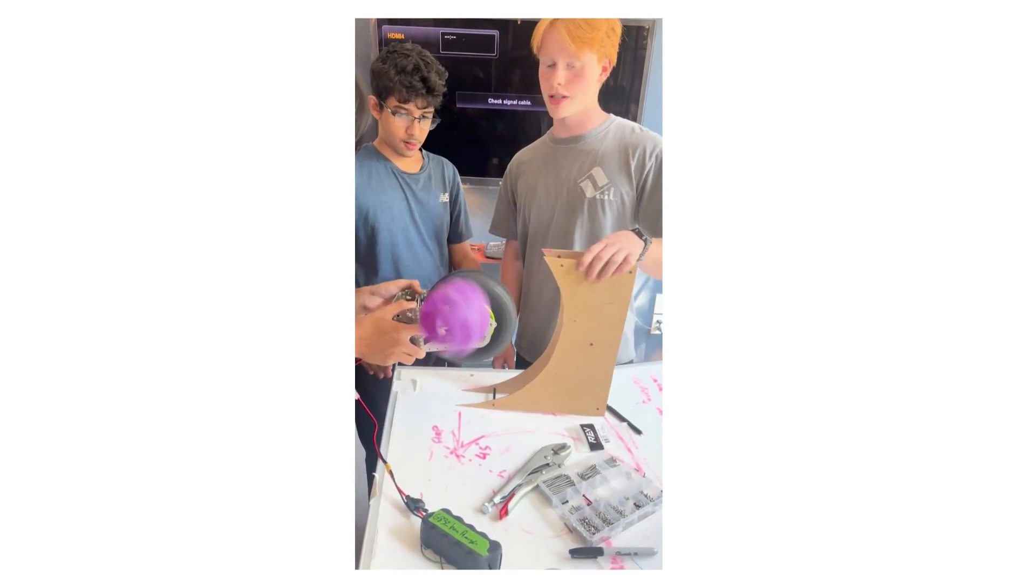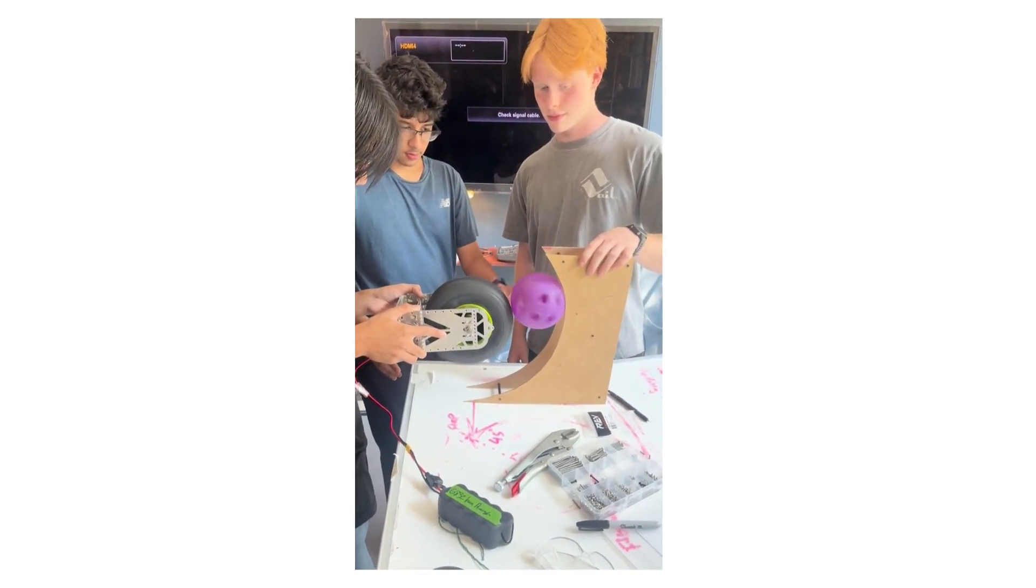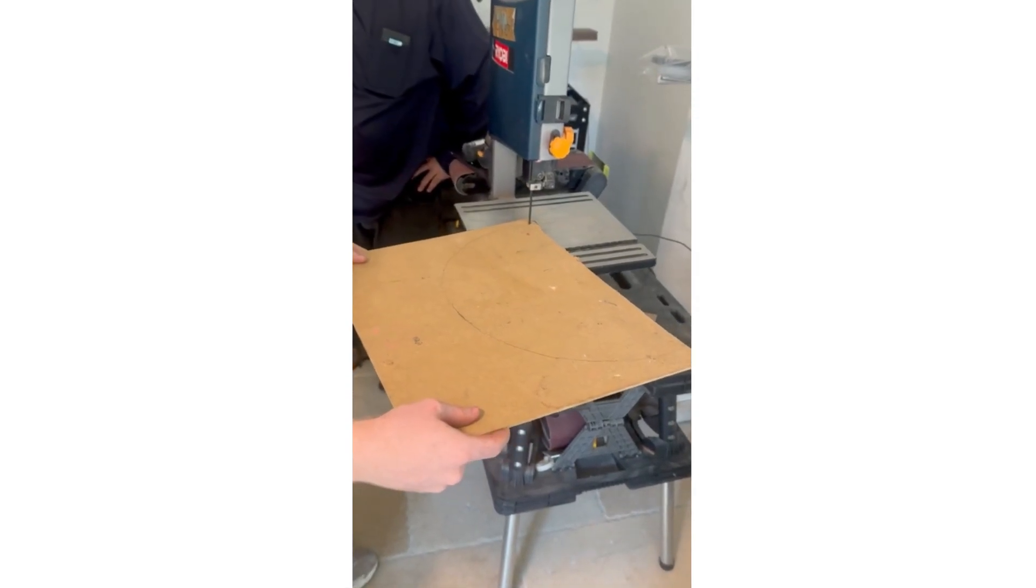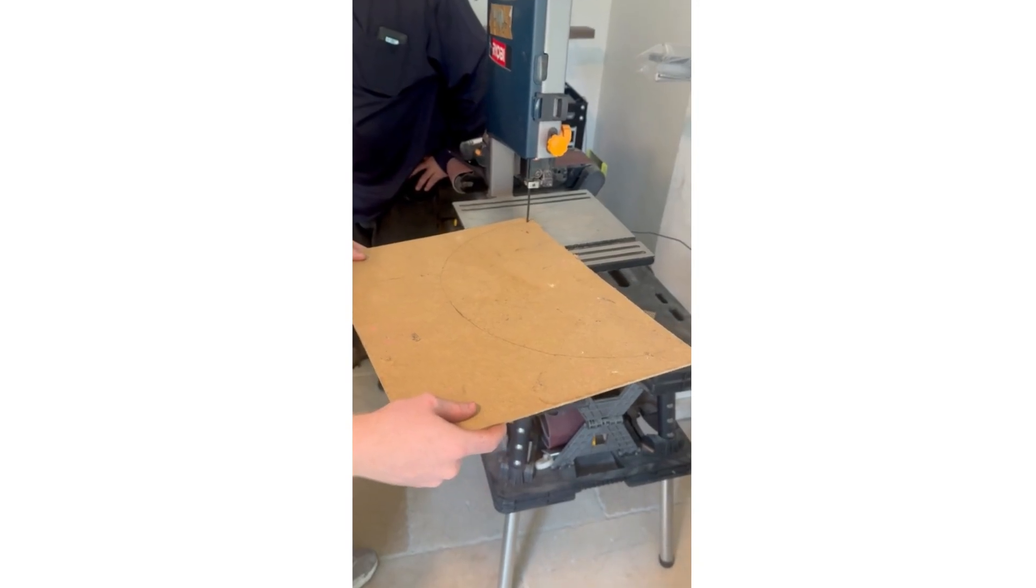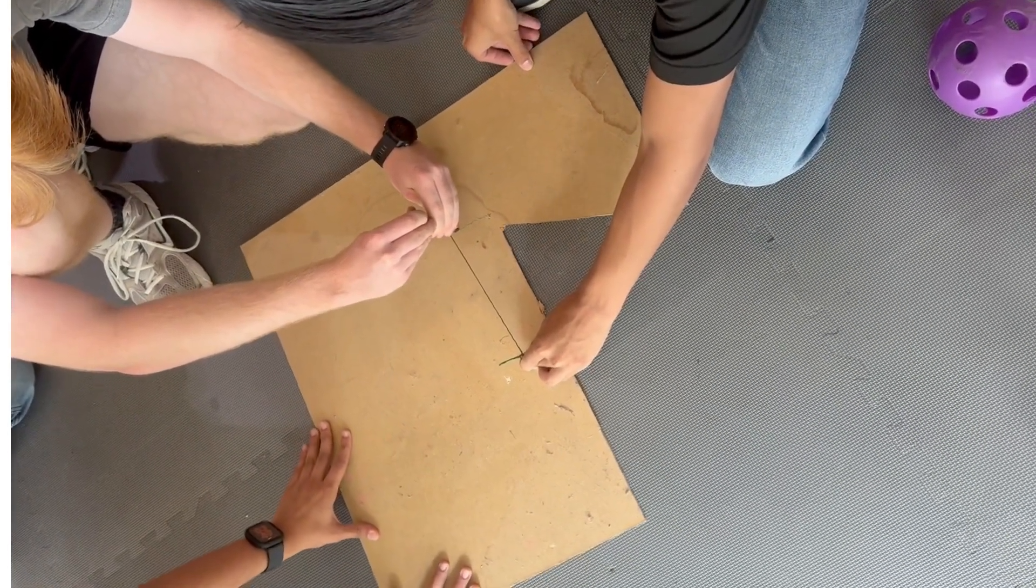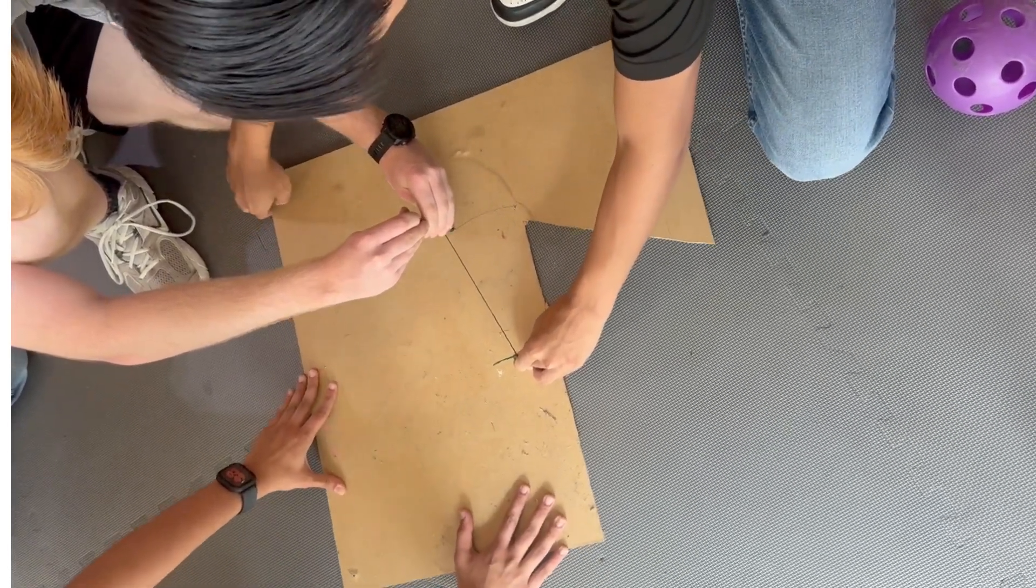We used prototyping sheets of MDF to make a circular board that would let us prototype the launcher geometry. We cut it so that the ball would leave at around 45 degrees. Since we do not have a big enough compass to create the correct size curve, we made our own using a nail, a string, and a pencil.